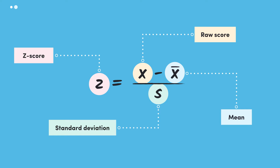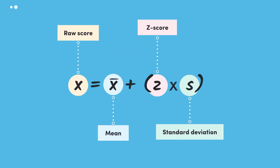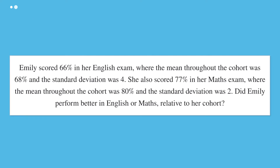But what if we were given a Z-score and asked to find what the actual value is? If we do a bit of rearranging, we can arrive at a rearranged formula. We can just plug in the mean, Z-score, and standard deviation to find out what the actual value is in our dataset.